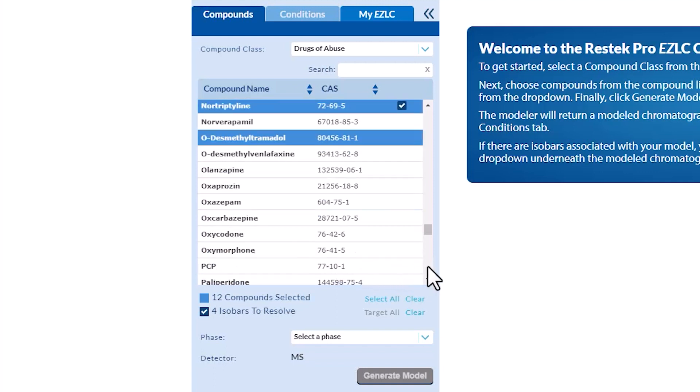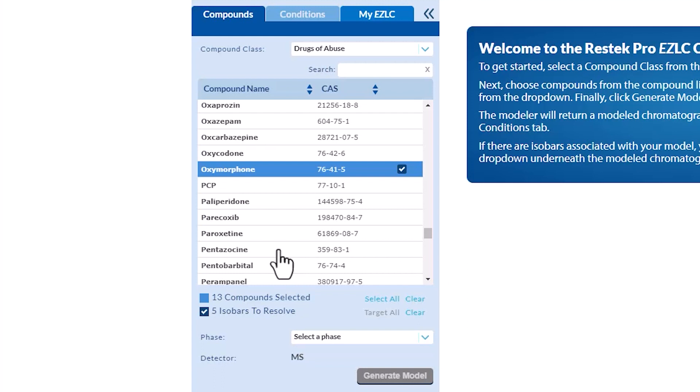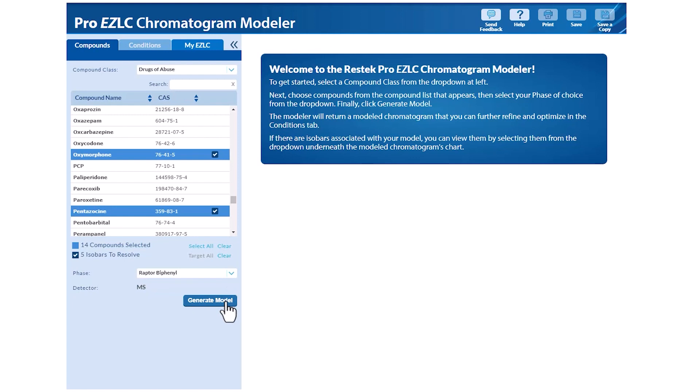After you have selected your compounds of interest, you need to choose which column or phase you would like to model the compounds on. Click the drop-down menu to select a phase. Here, we're selecting a Raptor biphenyl column and then click the Generate Model button.